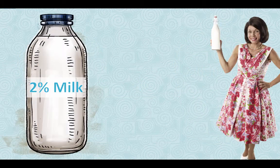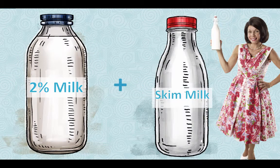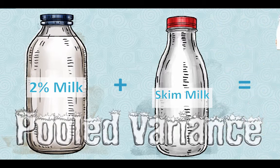But what if you had half a gallon of 2% milk and you mixed it with a quart of skim milk? If you poured them together, you would not expect 1%. There's more 2% milk than skim milk, so the combination will be closer to 2%, and that is the logic behind pooled variance.